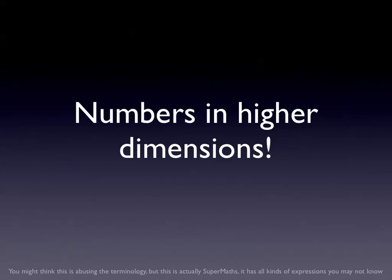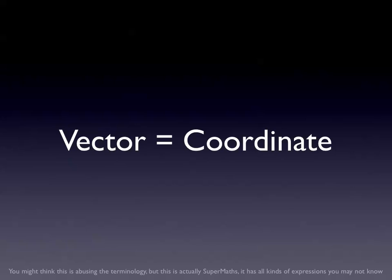I'm going to introduce some concepts that are key to graphics. One of these is vectors, which is basically a number in a higher dimension. Instead of thinking of a linear number in one direction, a vector is like a number in two directions. You can think of it as both a distance and an angle, or two coordinates on a grid, or in higher dimensions, three or n coordinates. A vector equals a coordinate - it's a pretty similar concept.